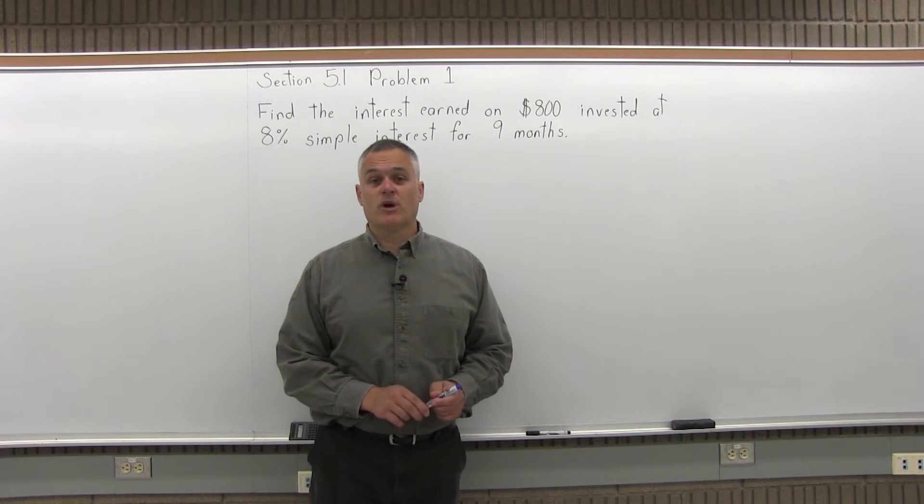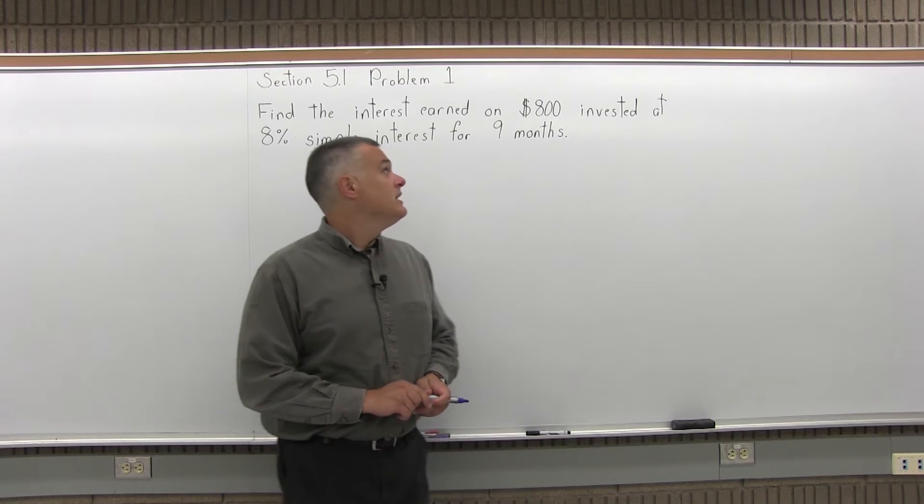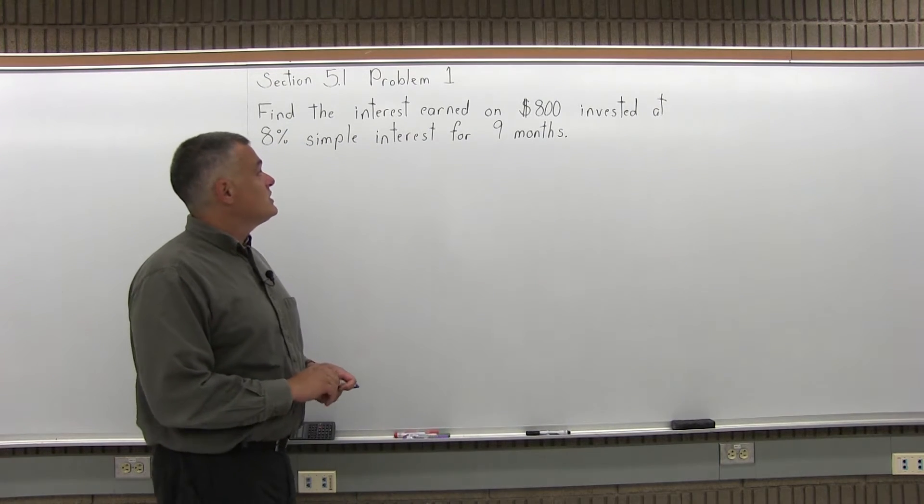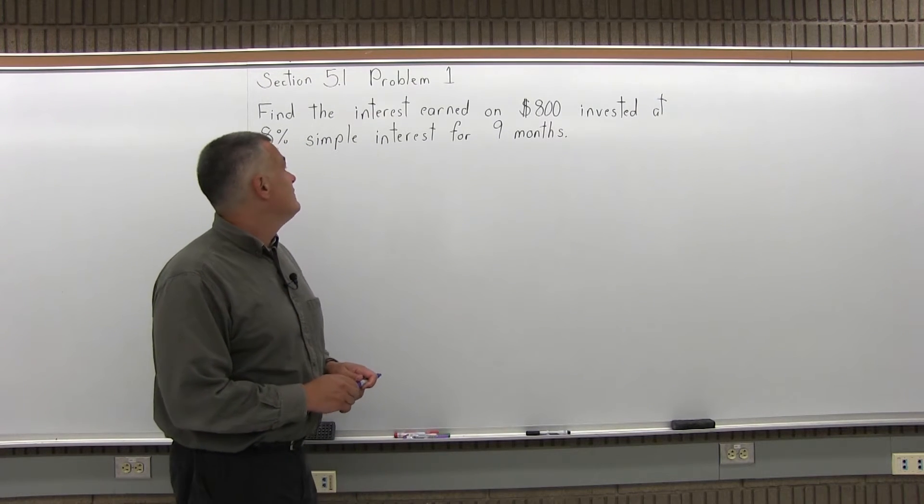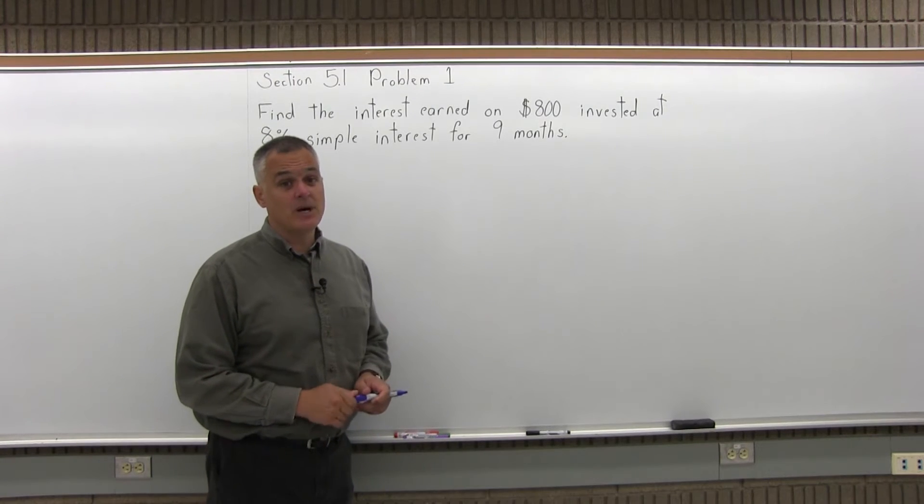This is problem number 1 from Section 5.1. It says, find the interest earned on $800 invested at 8% simple interest for 9 months.